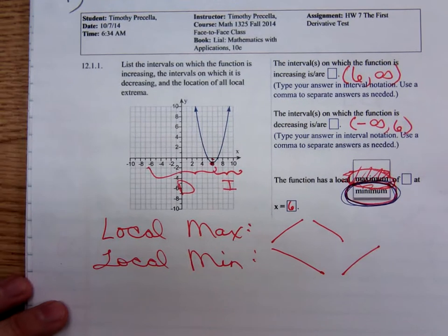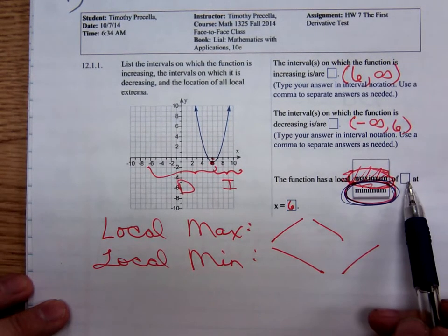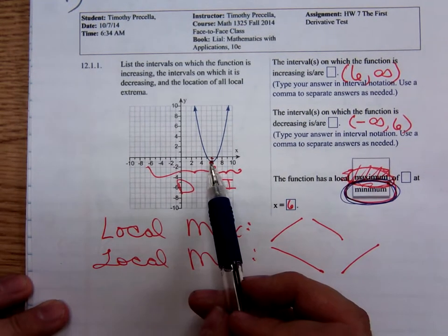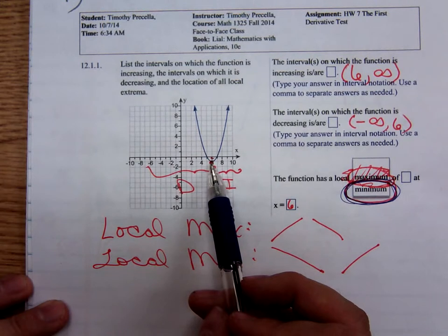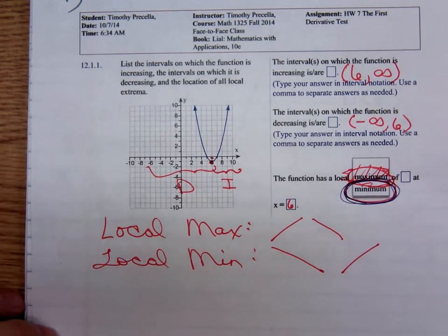So it occurred at an x value of 6. What's the y value at that point? Six, it's hard to tell. What is that y coordinate? Negative, I think it's negative one.